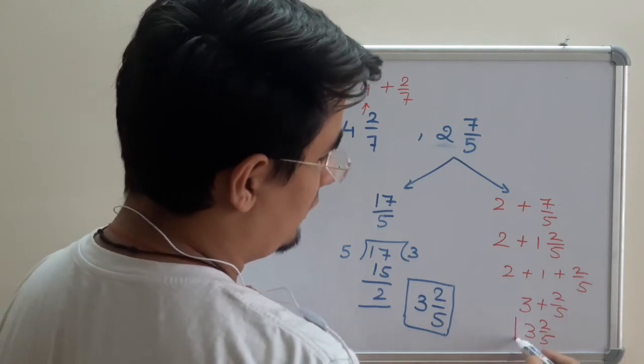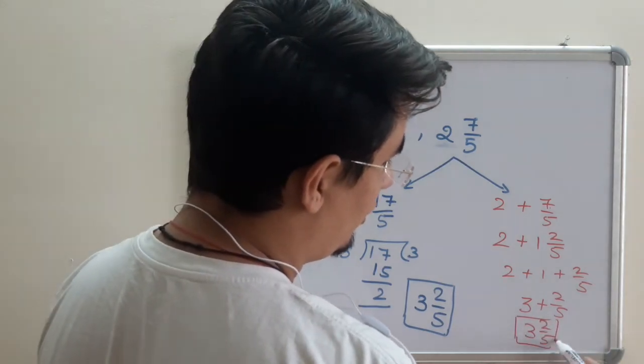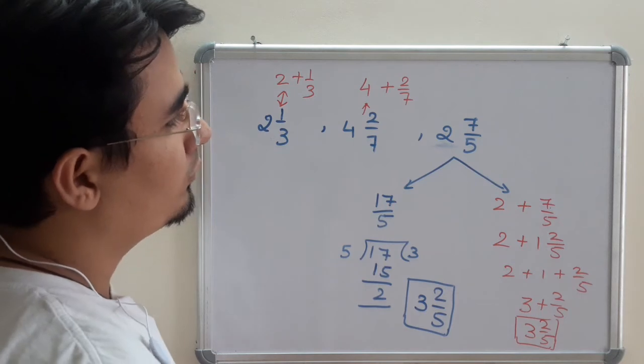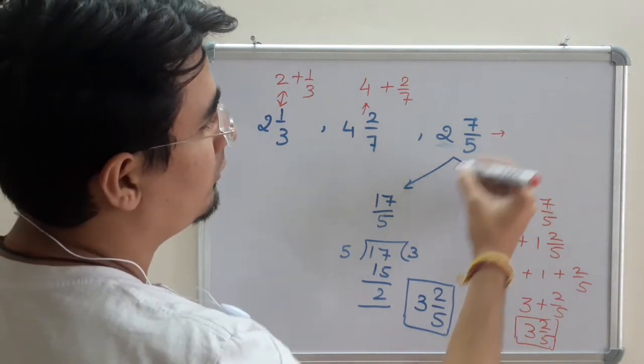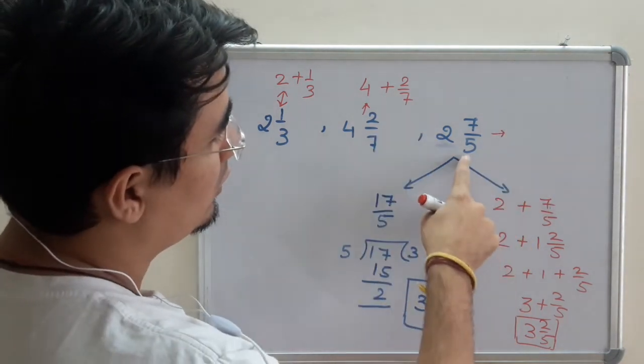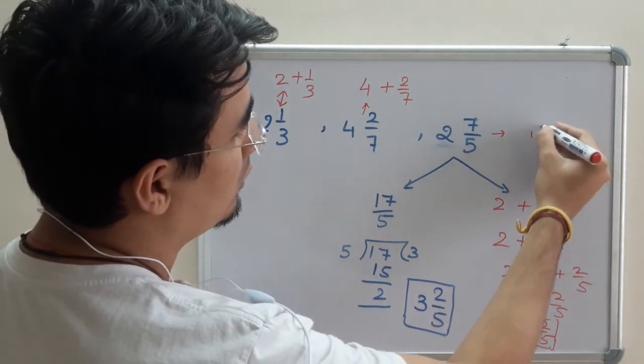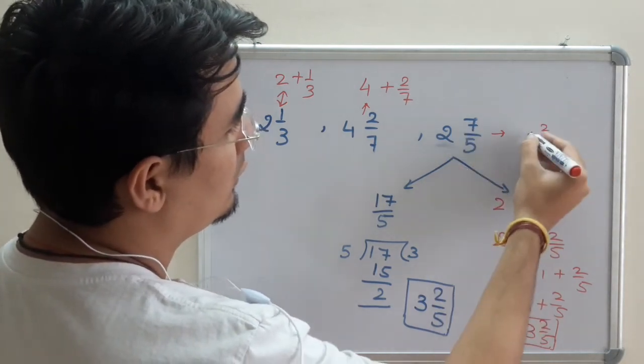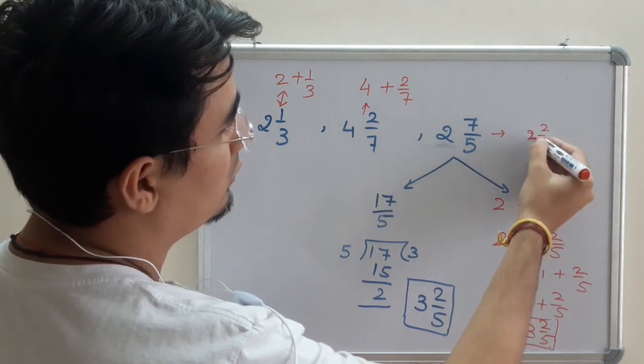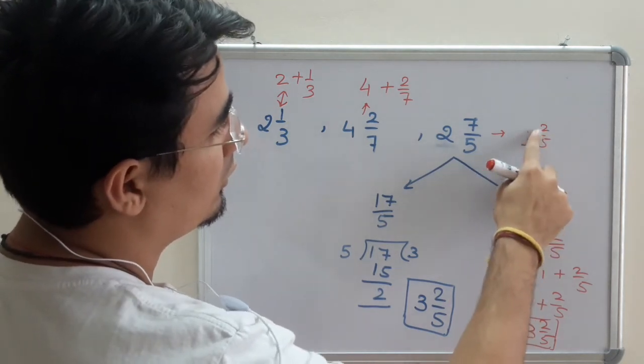You may think this is a long method, but don't worry. If I have to do it in mental calculation: 7/5 is 1 remainder 2/5, and plus 2 is 3. So 3 2/5. See, in one step I can do.